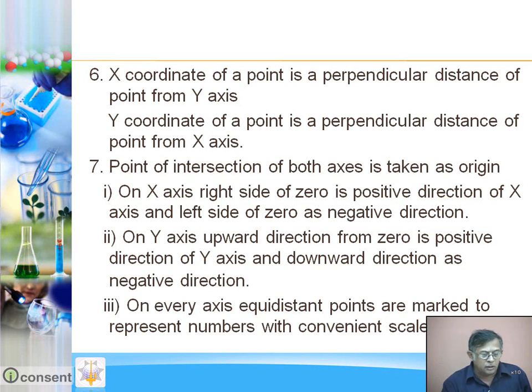The point of intersection of both axes is taken as origin, and it is (0, 0) because it represents 0 on X axis as well as 0 on Y axis.